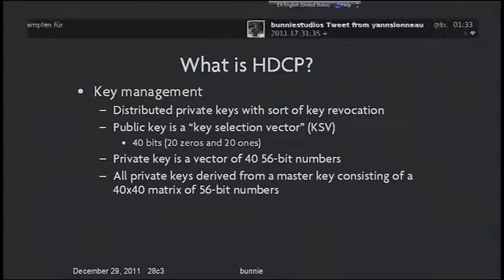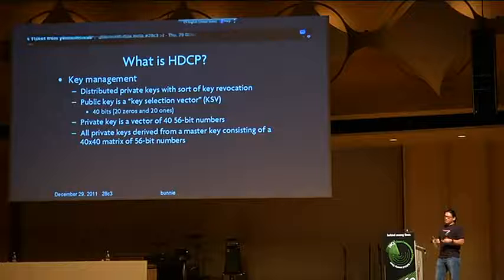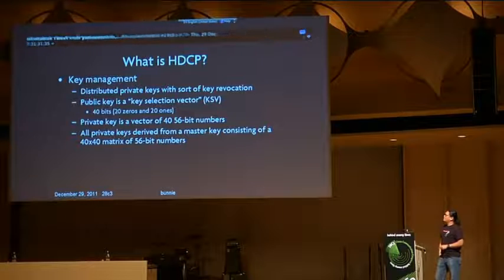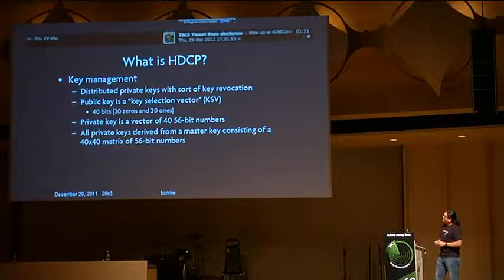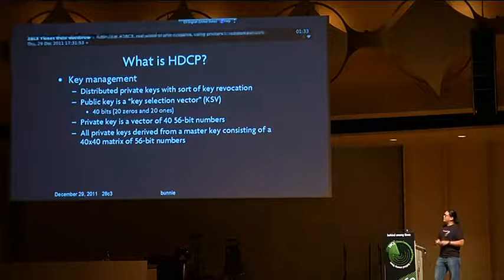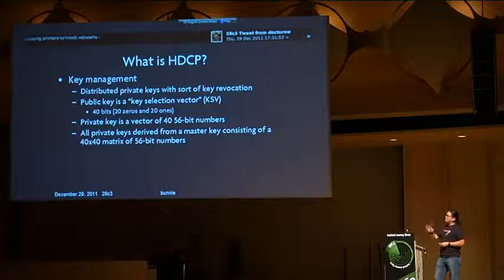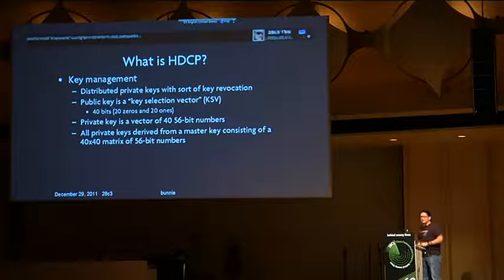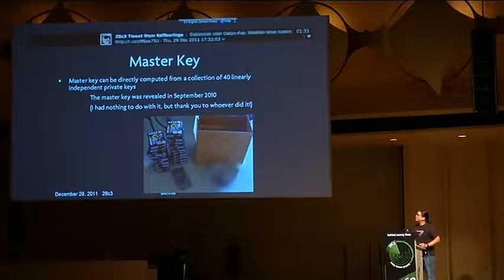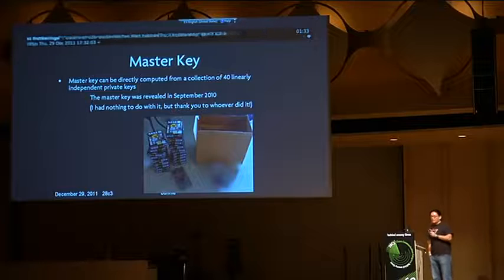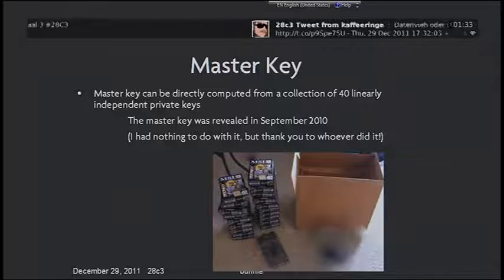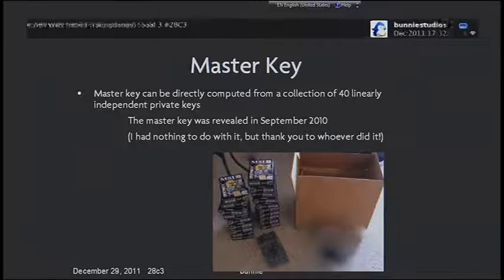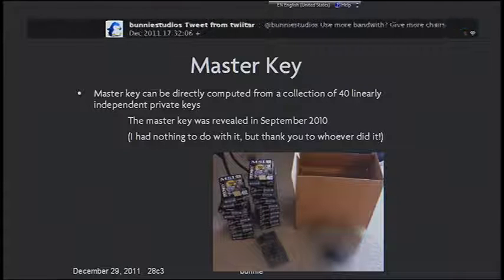The interesting thing about HDCP is the key management component. They use a key management system with distributed private keys and key revocation — it's pretty weak. A public key in their parlance is called a key selection vector, a 40-bit number consisting of 20 zeros and 20 ones. The private key is a vector of 40 56-bit numbers, and there's a dot product between the two that generates a shared secret. All private keys are derived from a master key consisting of a 40×40 matrix of 56-bit numbers. The master key was leaked about a year ago and can be computed directly from a collection of private keys recovered from video cards.